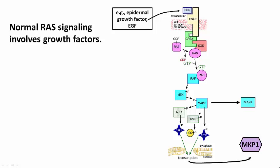The RAS gene was first discovered as a viral oncogene, delivered to normal cells by a virus and causing them to become cancerous. Only after its cancer-causing properties were pretty well known was this RAS gene shown to be a normal gene in the human genome, as well as in other animal genomes.